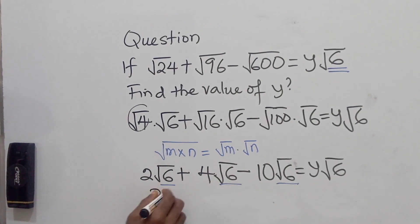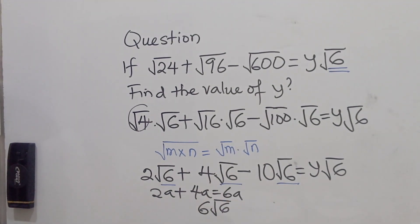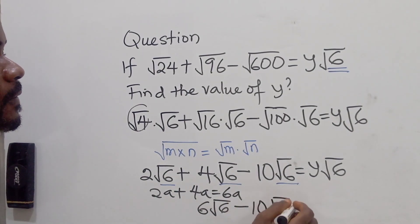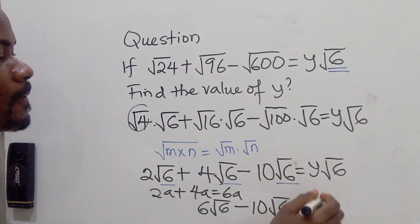It's like saying 2a plus what? 4a. This will give us what? Of course, it will give us 6a. So 2 root 6 plus 4 root 6 will give us what? 6 root 6. So minus what? 10 root 6 is, of course, what? Y root 6.